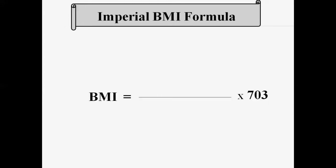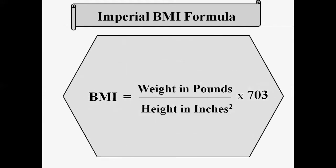For the imperial BMI formula, you must have measurements for two things: you must know the weight and the height. You need the weight in pounds and you need the height in inches, and you have to take care of the height units.